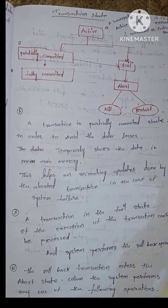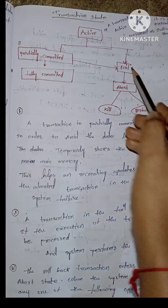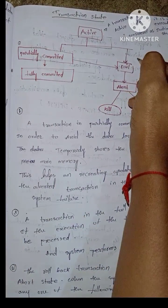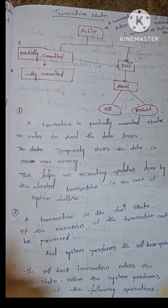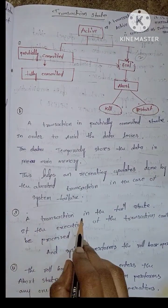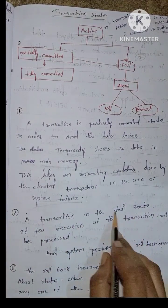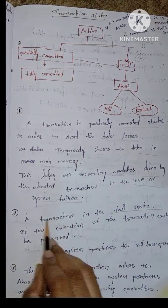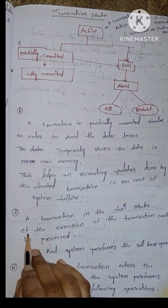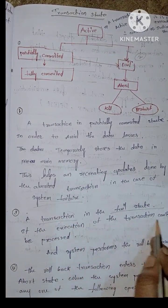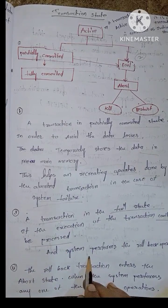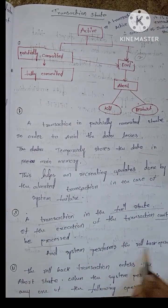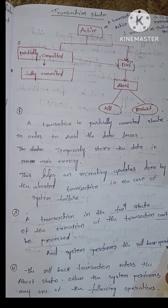Third, Fail State. A transaction in the fail state — if the execution of the transaction cannot be processed, the system performs the rollback operations.